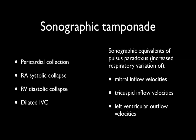It's also possible to look for sonographic equivalents of pulsus paradoxus — the increased respiratory variation of pulse pressure, or mitral velocities, tricuspid velocities, and left ventricular outflow tract velocities. However, this is beyond the scope of this course as it requires a great deal of accuracy and understanding of Doppler techniques.